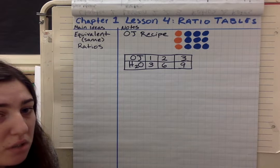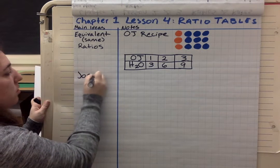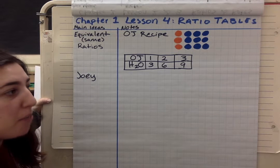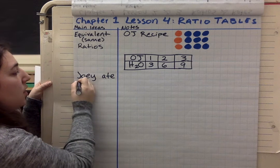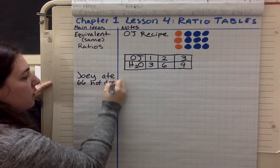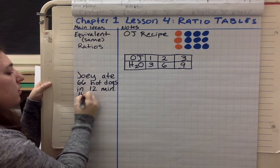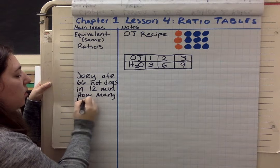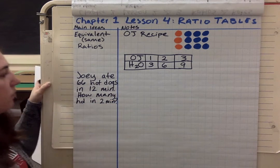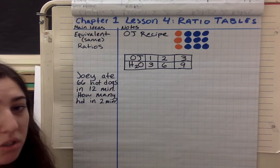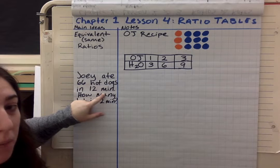We're still going to be using equivalent ratios, but we're going to add another idea. Joey is the top hot dog eater, and we're going to use a hot dog competition for our example. Joey ate 66 hot dogs in 12 minutes. How many hot dogs — HD stands for hot dogs — did he eat in two minutes? I'm going to make a ratio table to show this problem. My first ratio is 66 hot dogs for every 12 minutes.